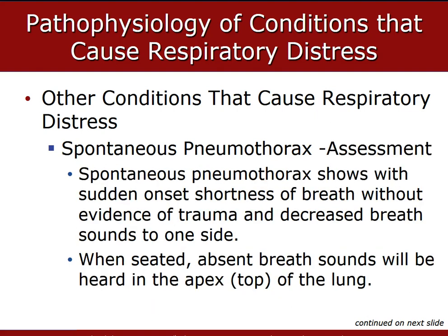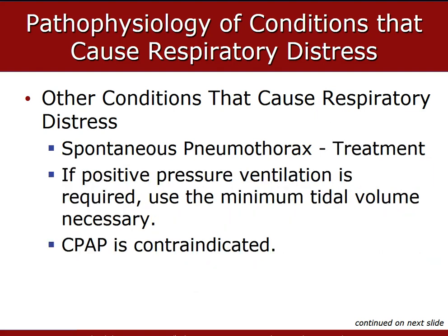Signs and symptoms of a spontaneous pneumothorax include a sudden onset of shortness of breath, sharp chest pain or shoulder pain, decreased breath sounds to one side, tachypnea, diaphoresis, pallor, and cyanosis which is a late sign, or it can progress to a tension pneumothorax. SpO2 will be under 94%.